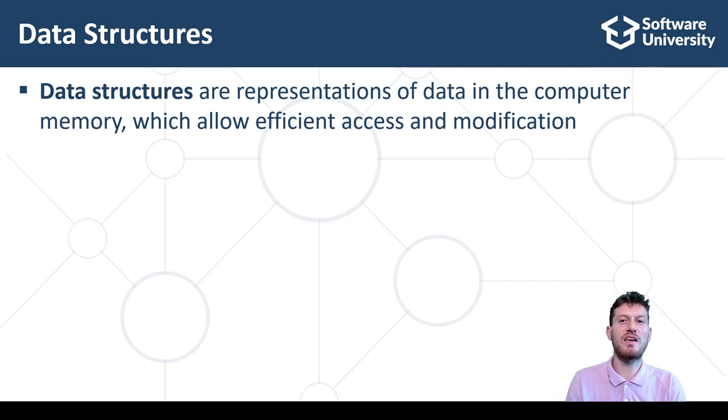Data structures can be linear structures such as arrays and lists, tree-like structures such as balanced trees, graph-like structures such as graphs, hash-based structures such as hash tables, and others.